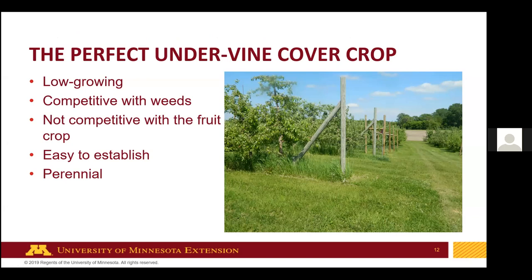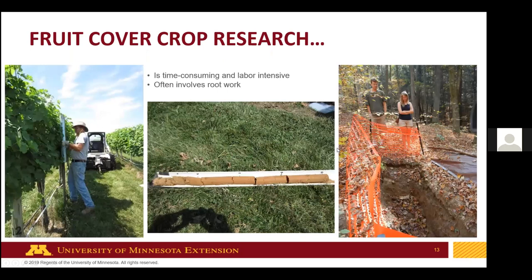What would the perfect undervine cover crop look like? You want something low-growing — ideally under a foot tall so it doesn't keep getting taller requiring constant weed-whacking. You want it competitive with weeds but not too competitive with the fruit crop. It should be easy to establish. In our Midwest climate where we're not cultivating underneath rows very often, I'd recommend planting a perennial rather than experimenting with annual cover crops.